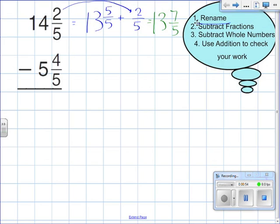And now what I have left is 13 and 7 fifths. So now I have a new mixed number. And if I look down at the other mixed number that I'm going to subtract, now it's going to be able to work because I have 13 and 7 fifths minus 5 and 4 fifths. Look at the numerators. I'm able to subtract. Now in this case, we're going to be subtracting fractions first.